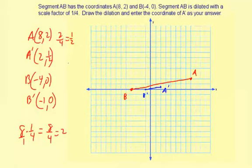Now for an answer, we need the coordinates of A prime. A prime has the coordinates (2, 1/2), so that's all you have to enter in. Make sure you put the parentheses around the numbers. So that's how you draw a dilation, and this one is a reduction because the image is smaller than the preimage.